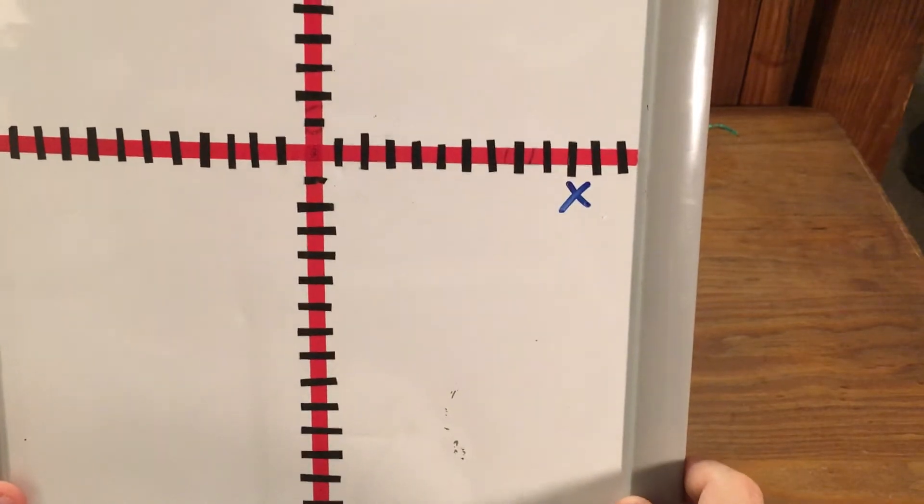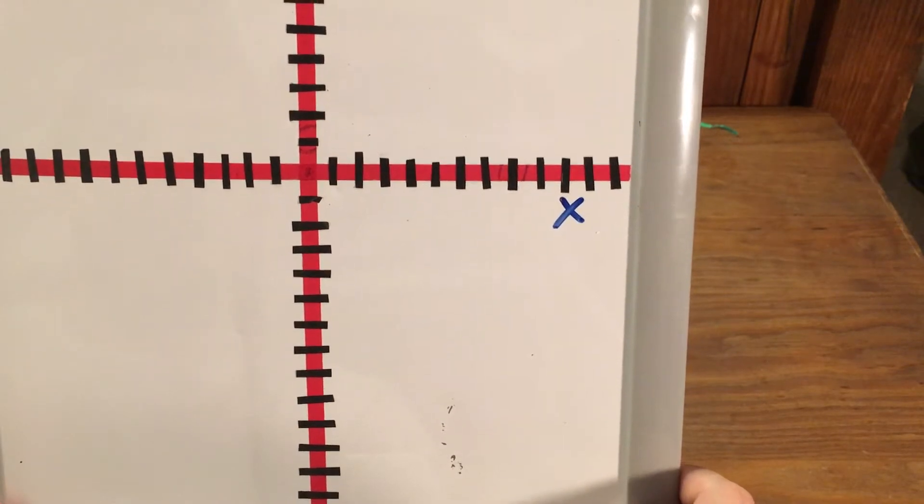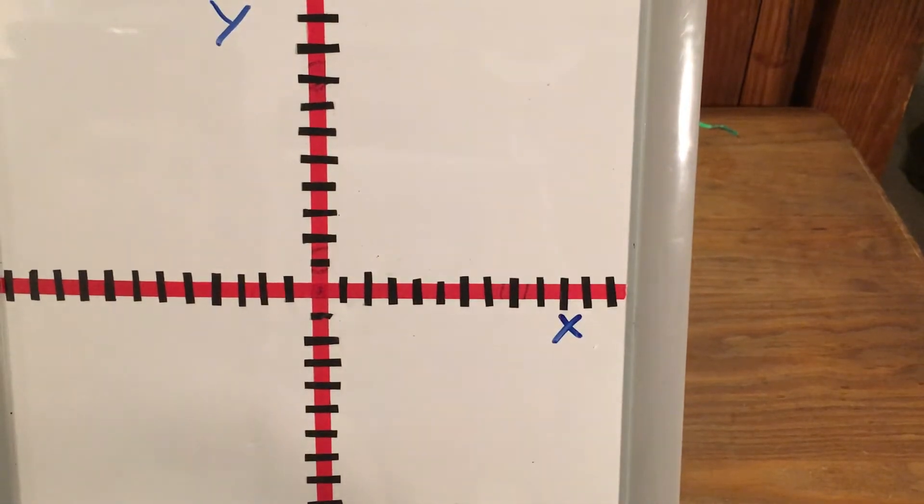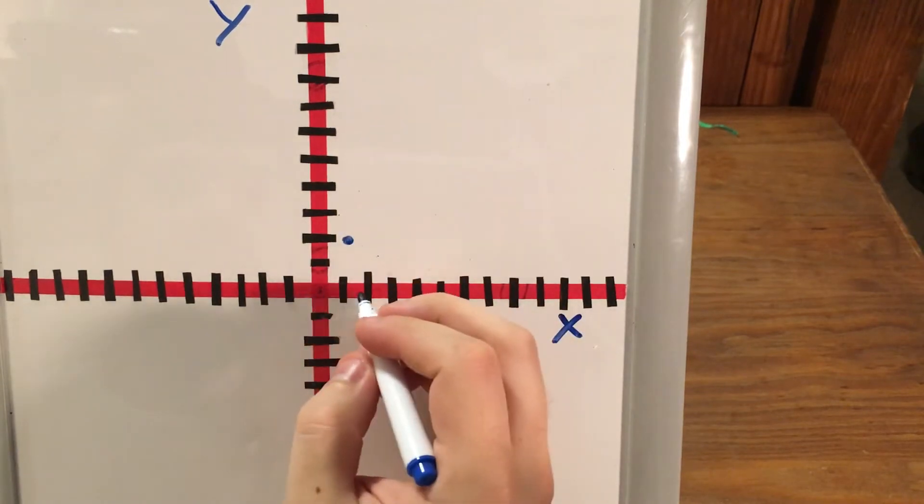For choice D, my 3 points are (1, 2), (2, 4), and (4, 8). So let's go ahead and graph those. x of 1, y of 2 is right there. x of 2, y of 4 is right here.